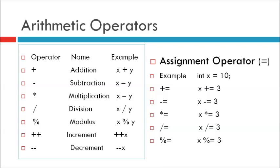C++ assignment operators. Assignment operators are used to assign values to variables — that is the equal (=) operator. In the example below, we use the assignment operator equal to assign the value 10 to a variable called x: integer x equal to 10. The addition assignment operator (+=) adds a value to a variable. For example: integer x = 10, then x += 5, which means x = x + 5. A list of all assignment operators includes +=, -=, *=, /=, %= and more.